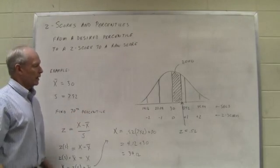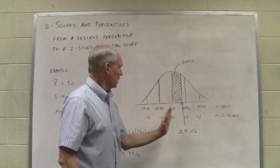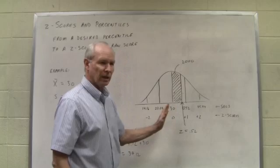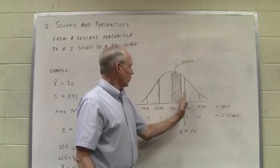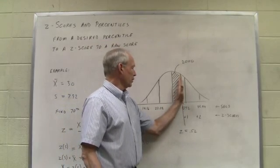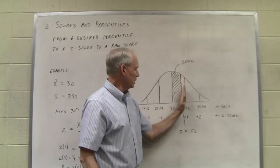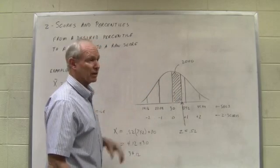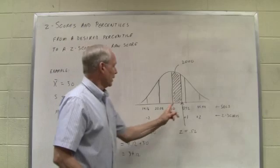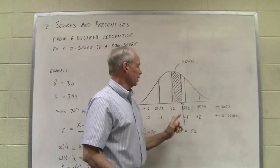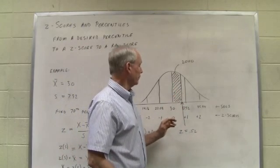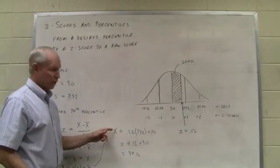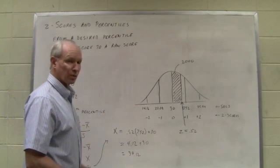Once again, here's what we did. I drew the normal distribution first. I located approximately where that 70th percentile should be, just to have something to look at. But wherever that is, we know that it's going to have 20% of all the scores between the mean and that point, and then the other 50% make up the 70th of the 70%. If I know this is 20%, I can go to column 5, look up the z-score, and then I can use that z-score to transform our number back to a raw score.